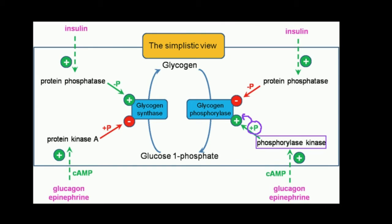It turns out that two signaling molecules, glucagon and epinephrine, activate phosphorylase kinase. The way that they do that is through their biosignaling mechanisms — they tend to increase the concentration of cyclic AMP, or cyclic adenosine monophosphate. Cyclic AMP activates phosphorylase kinase, which phosphorylates glycogen phosphorylase and makes this enzyme active. On the flip side, a protein phosphatase, when that's active, dephosphorylates glycogen phosphorylase and makes it inactive.